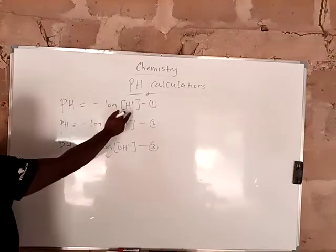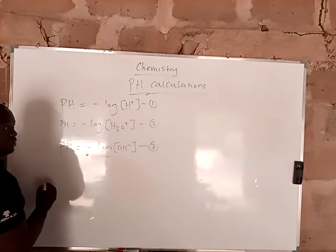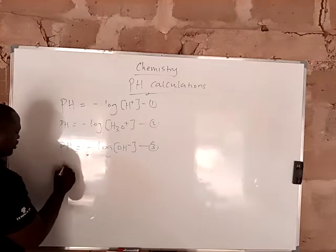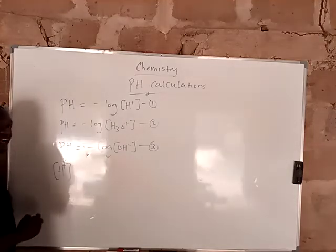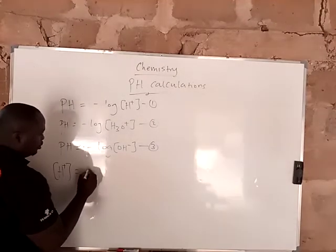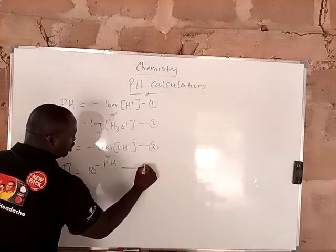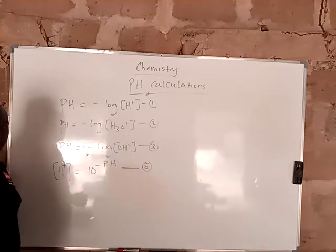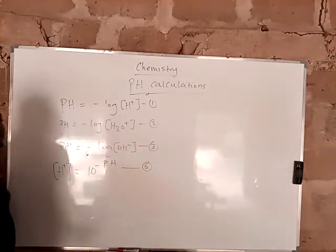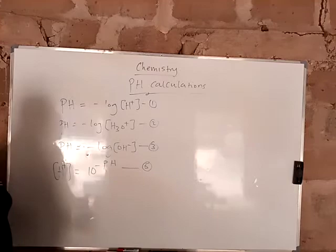From equation 1, I want you to know something. Hydrogen ion concentration, if I ask you to find it, equals 10 raised to the power of minus pH. And this is equation 4. This is by change of base formula.